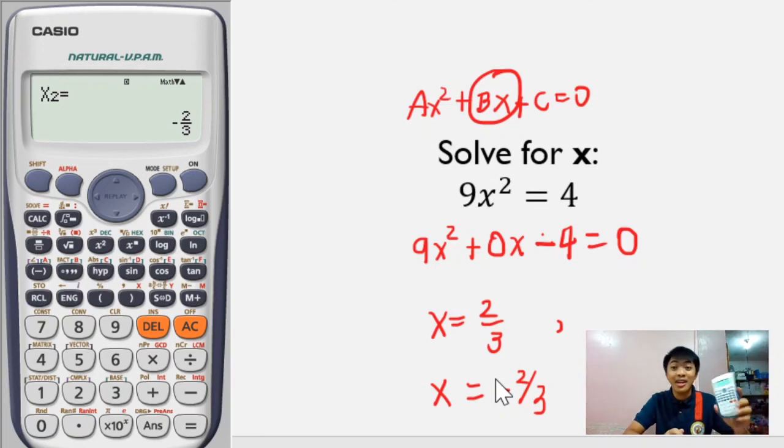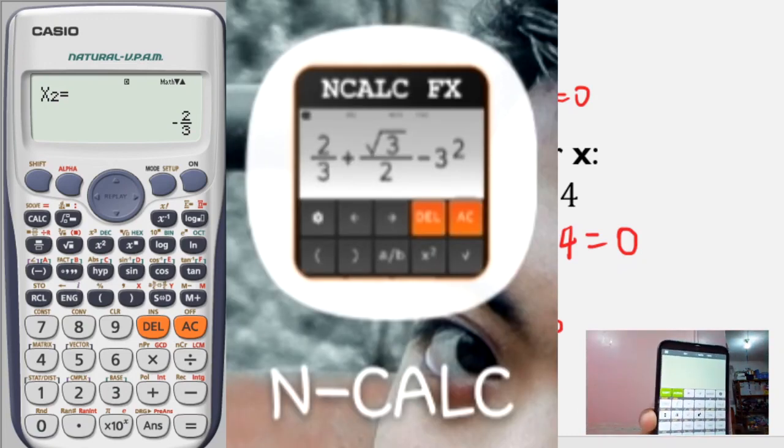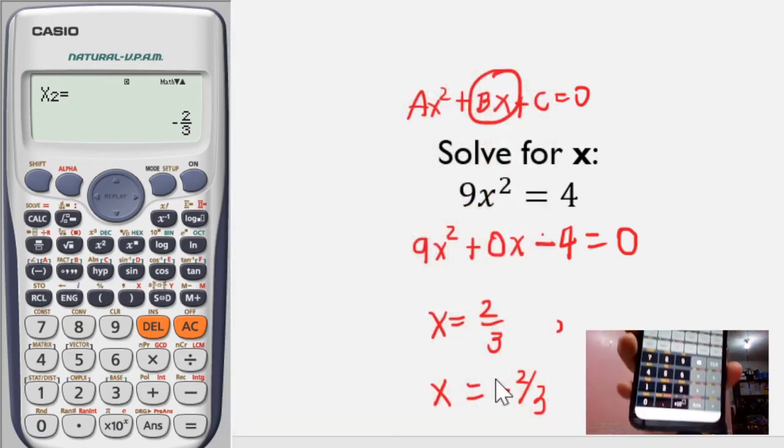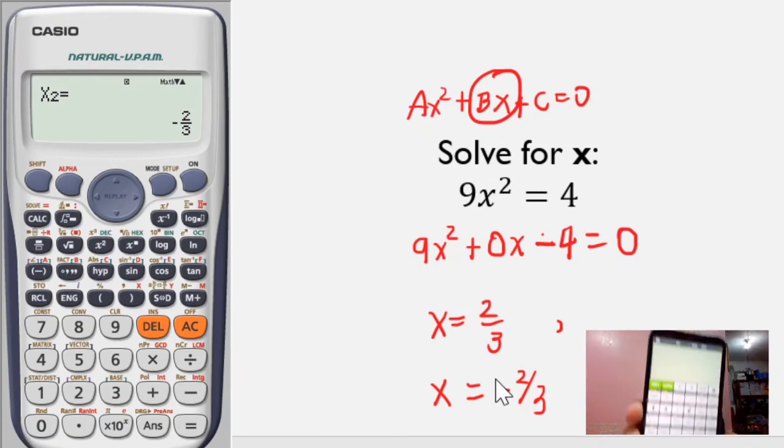Let's have one more example. Before we input in our calculator, we have to make sure that the equation is written in general form. Ulitin natin. Ang general form, yun yung lahat ng terms na equation na sa isang side, and then naka-equate sa zero. Gawin natin yan.